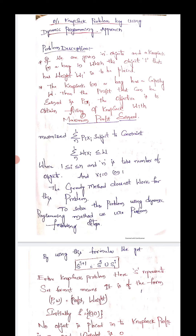What is a knapsack? A knapsack is nothing but a bag. The bag has capacity M. In the bag we have to place N number of objects, where object i has weight Wi and profit Pi. This is the concept of the 0/1 knapsack problem.